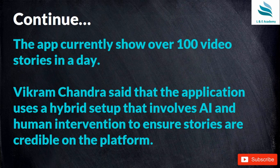The app currently shows over 100 stories a day. Vikram Chandra also said that the application uses a hybrid setup involving artificial intelligence and human intervention to ensure stories are credible. So it's not only AI driving news content to your mobile phone, but also people working on segregating news that is authentic and genuine before it is presented to users.